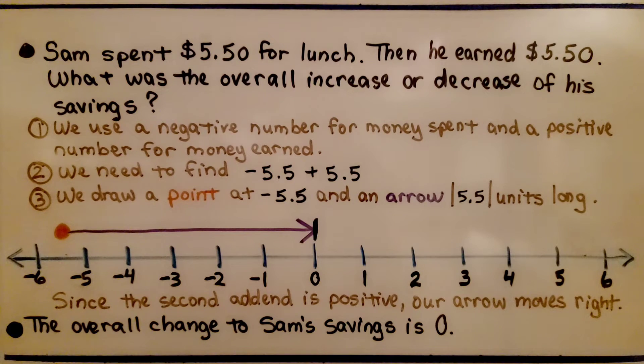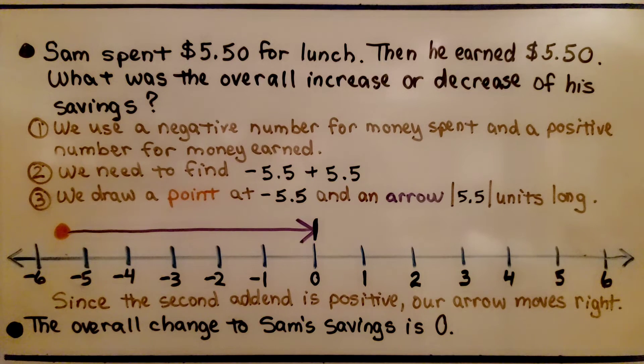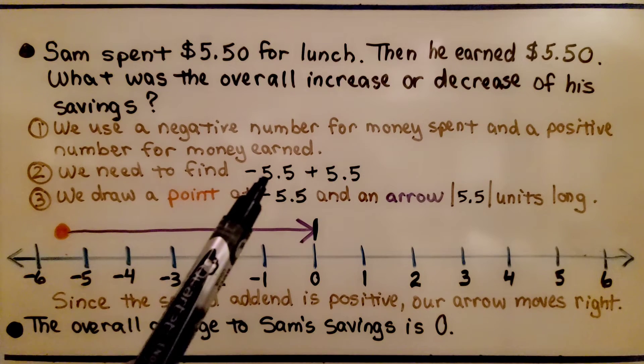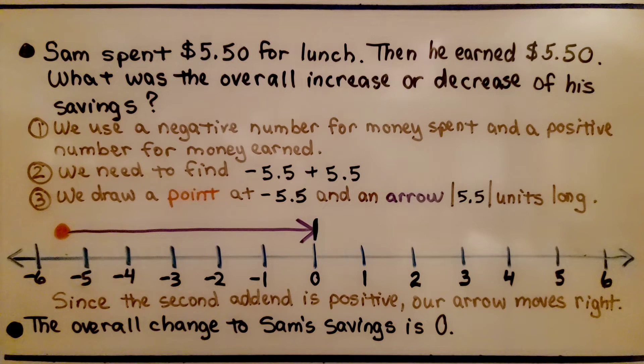Here's our first example. Sam spent $5.50 for lunch, then he earned $5.50. What was the overall increase or decrease of his savings? First, we use a negative number for money spent and a positive number for money earned. We need to find negative 5.5 plus positive 5.5.